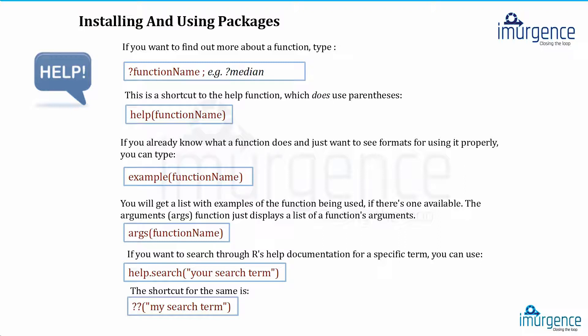The help file shows how the function is used, what parameters are passed, what the default values are, and what options are available if you want to change them. You can also use the help function — it stands as a separate function. Type 'help' in small alphabets, because R is very case sensitive; if you type capital 'Help' it won't work. So type help followed by the function name, like mean or median.